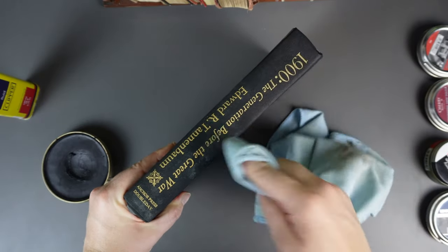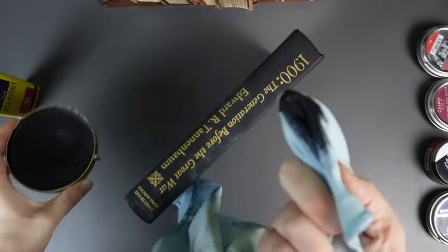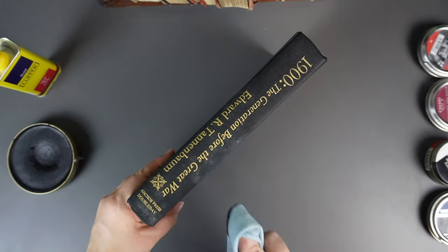If the lettering on your book has been rubbed away at all, then the cloth underneath will obviously pick up the polish, but solid lettering, especially gilt lettering, shouldn't generally pick it up.